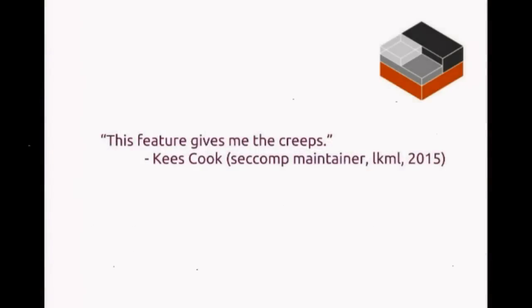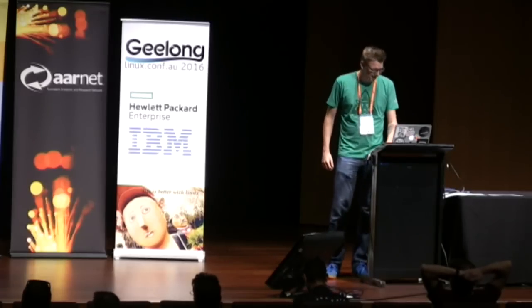Another feature that gives people the creeps: when doing the kernel-side dump for seccomp filters, CRIU needs to inject code into the process's address space and run it. If that injected code has a system call blocked by the seccomp filter on that process, the whole process will die and you can't dump it. So instead there's a way to remotely disable seccomp on that process — which is the feature that gave Kees Cook the creeps.